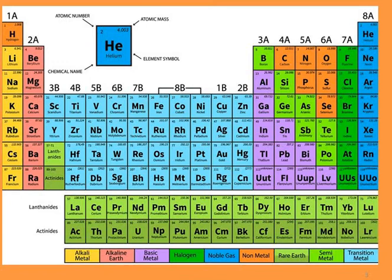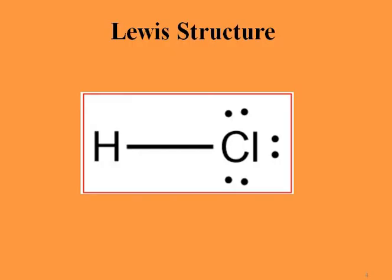That means one mole of HCl is equivalent to 36.461 grams of HCl. Now let's take a look at the Lewis structure of hydrochloric acid. Hydrochloric acid has two other names — one of them is hydrogen chloride and the other is muriatic acid.